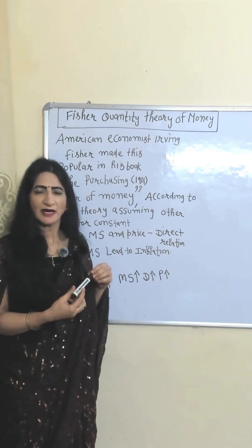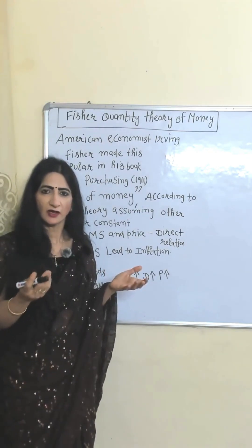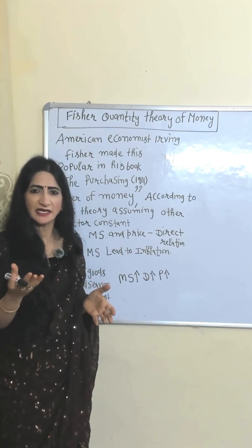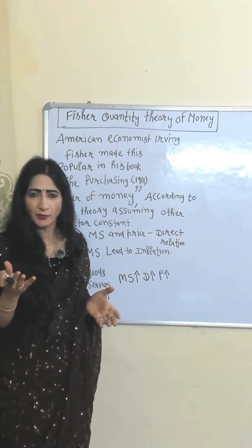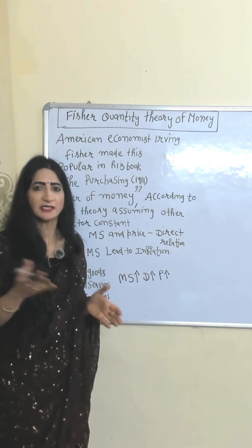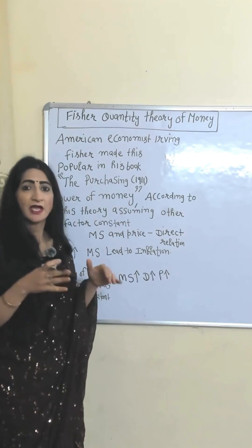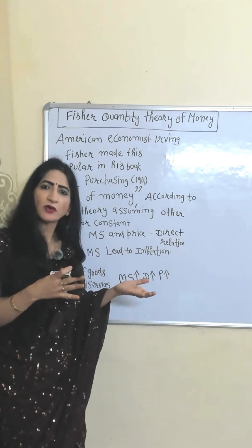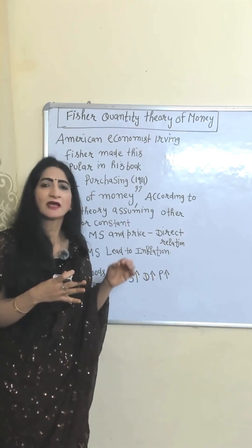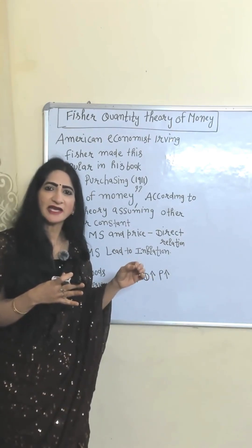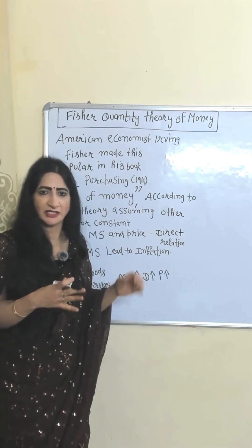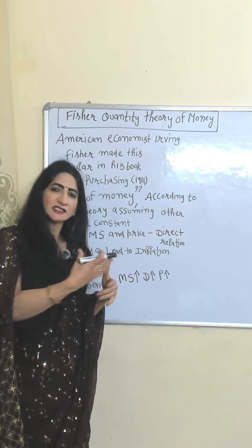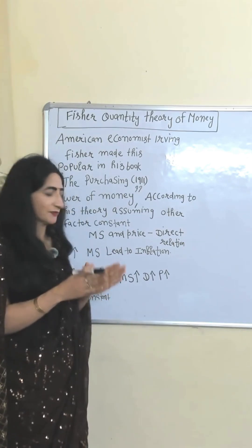This theory is given by American economist Irving Fisher in his 1911 book named The Purchasing Power of Money. According to this theory, assuming all other factors constant, money supply and price have a direct relation. That means an increase in money supply will lead to inflation.